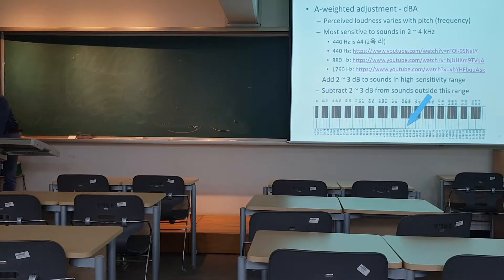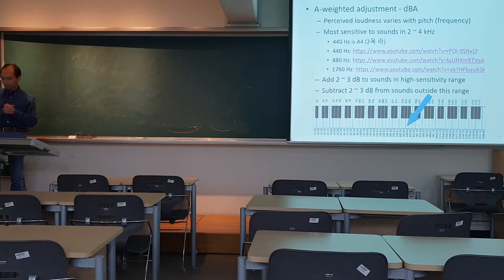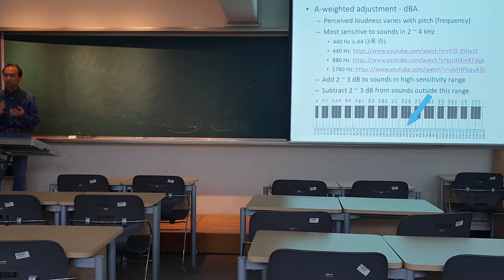Adding around 2 to 3 decibels for sounds in the high sensitivity range — that is 2 to 4 kilohertz — and subtracting 2 to 3 decibels from sounds outside that range: that is what A-weighting is doing. As another example, 440 hertz is usually the highest note that a regular male vocal can sing.